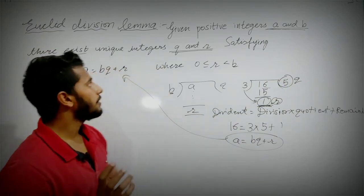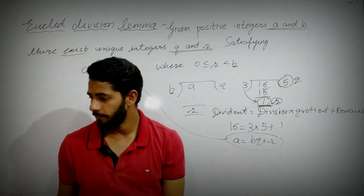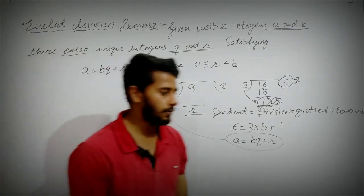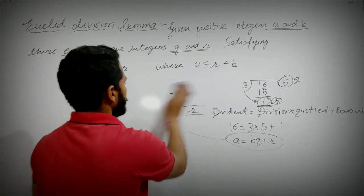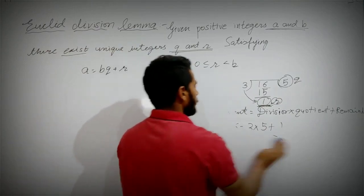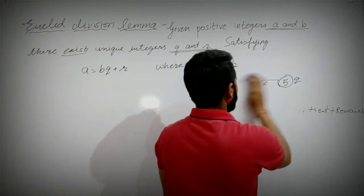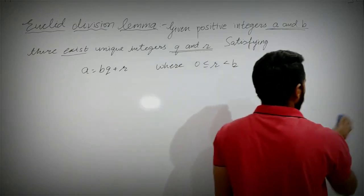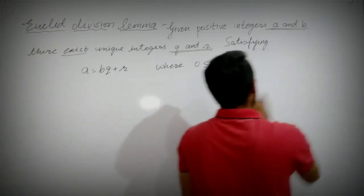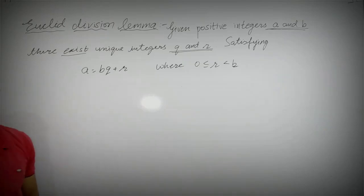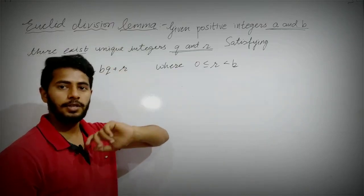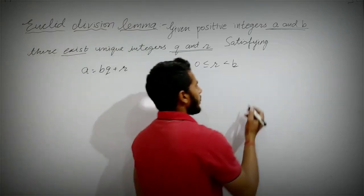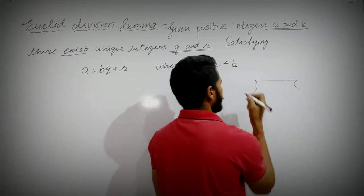Now, where is Euclid's Division Lemma used? Sometimes it is called Euclid's Division Algorithm. The difference is: when we apply Euclid's Division Lemma repeatedly to solve a particular problem, it becomes an algorithm. There's nothing much to worry about. It is used to find the HCF.